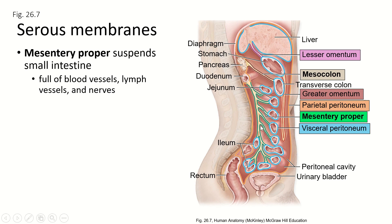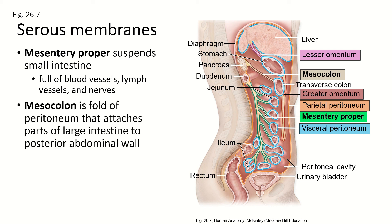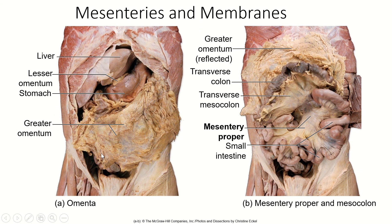The mesentery proper is all of this green tissue, which is filled with lots of blood vessels, nerves, and lymphatic vessels. The final structure is the mesocolon — specifically the transverse mesocolon, which holds the transverse colon to the backside of the abdominal wall. It's actually not held to the front side. There's also another mesocolon for the sigmoid colon on the left side of the abdomen.